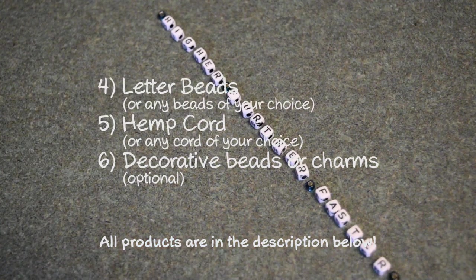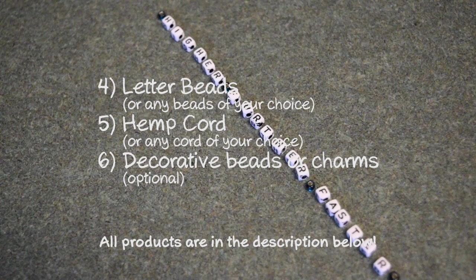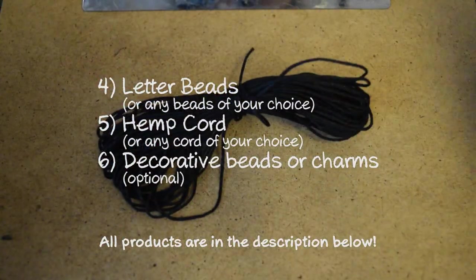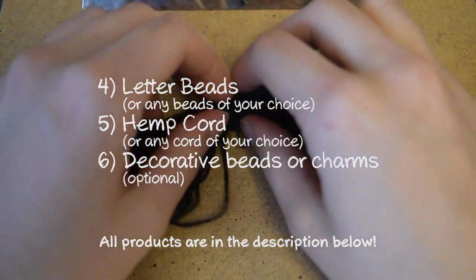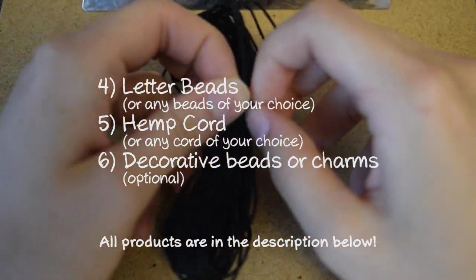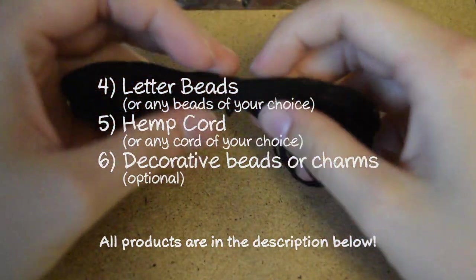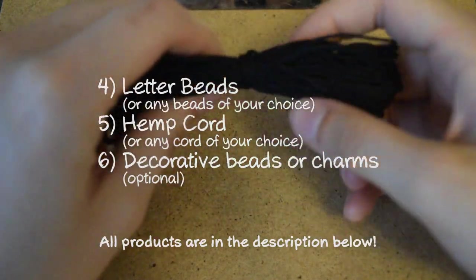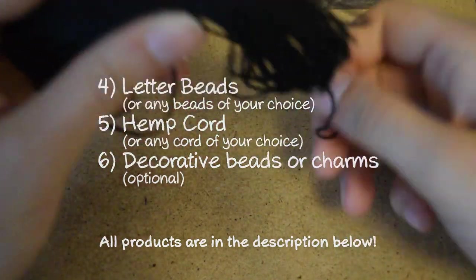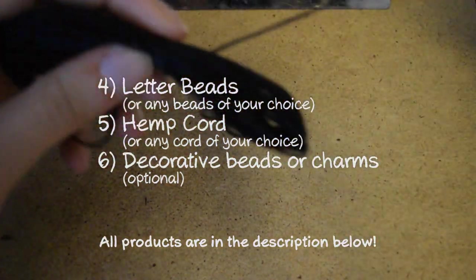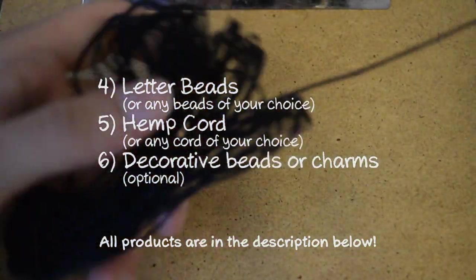You will also need letter beads to spell the quote you want, or alternatively, any beads of your choice. For this anklet, I'm going to use hemp cord. However, if you don't want to use hemp cord, you can use embroidery floss, wax polyester cord, yarn, or whatever you choose, as long as you are mindful of the thread thickness and the size of the holes in the beads you are selecting.